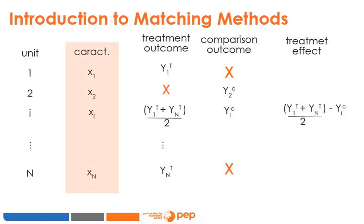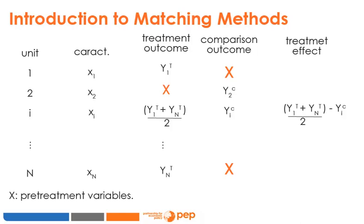The X variables used for matching are called pre-treatment variables. Unlike the name suggests, X does not necessarily reflect values before the intervention — X consists of variables that are not influenced by the treatment. For example, age cannot change as a result of the treatment, and gender also generally does not change as a result of treatment. Education can be used as a matching variable if it is not influenced by the treatment being evaluated. Any variable measured before the treatment is also a pre-treatment variable.